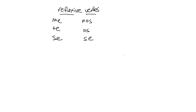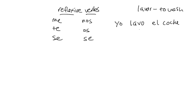The action is not going away from the subject. For example, you might have yo lavo el coche. Lavar is to wash. Used in this way, yo lavo el coche, the action of washing is moving away from the subject towards the direct object, el coche. But with a reflexive verb, the action goes back on the subject, and you end up with yo me lavo. The action goes back onto the subject yo, and we do that with the reflexive pronoun.